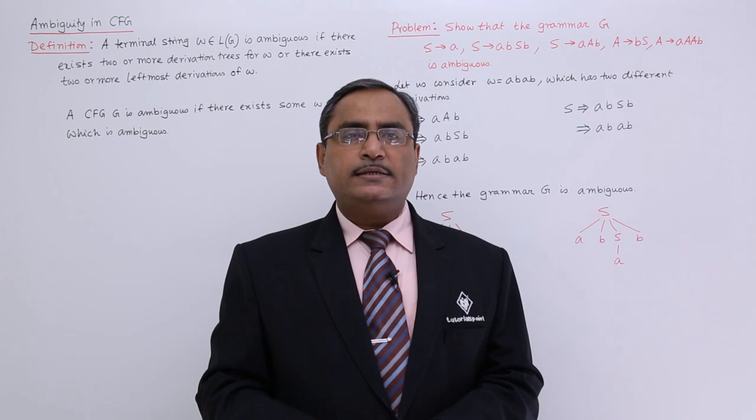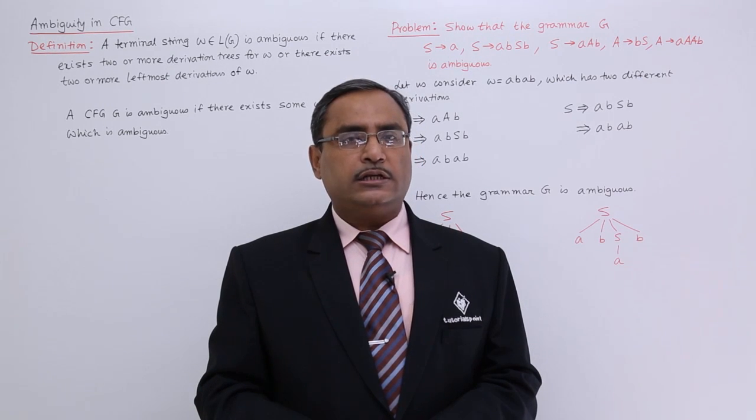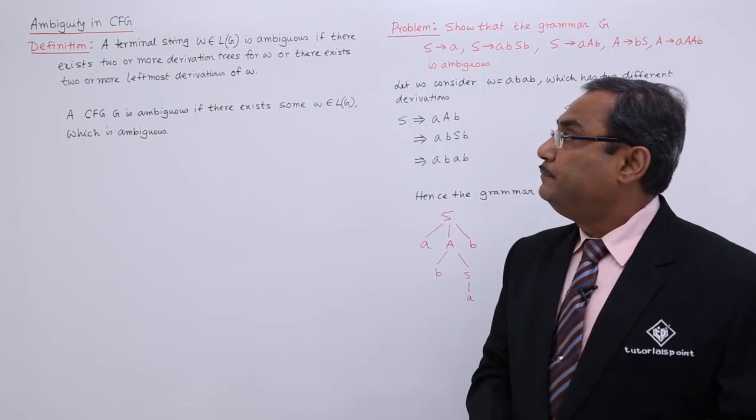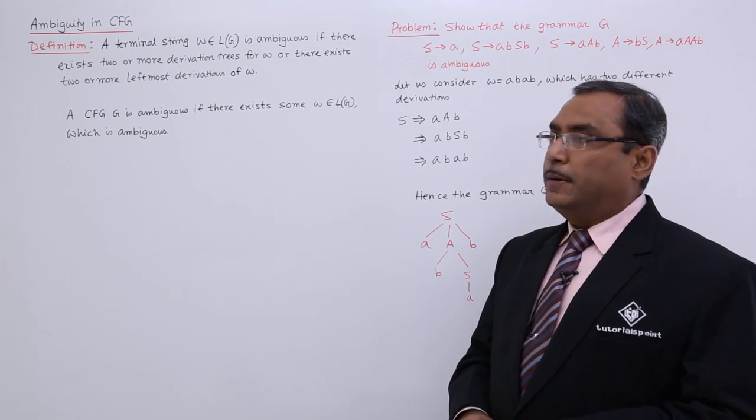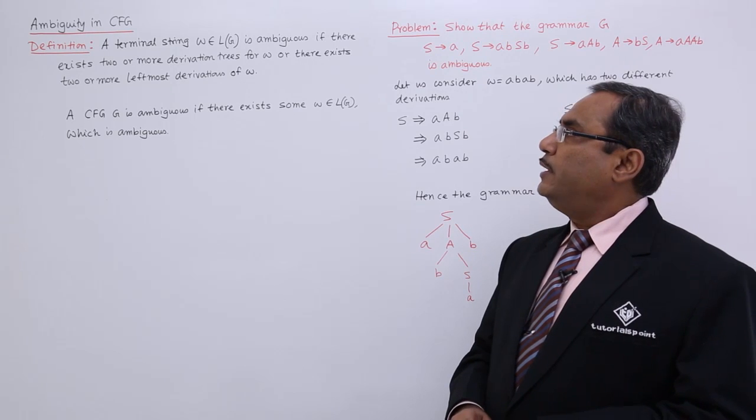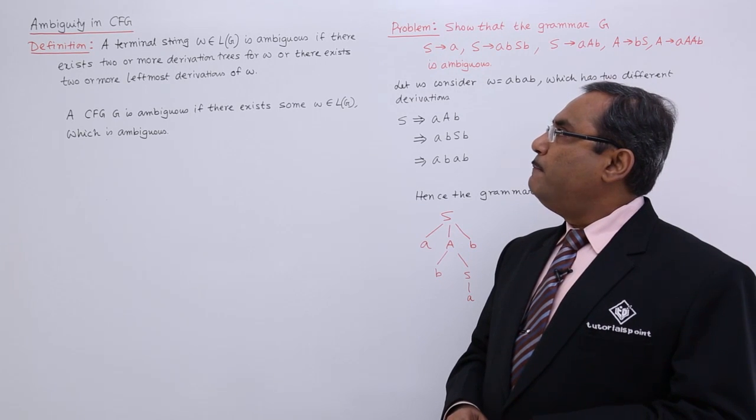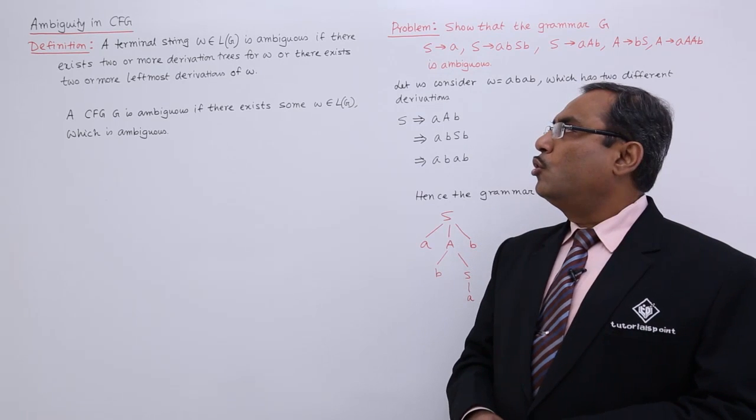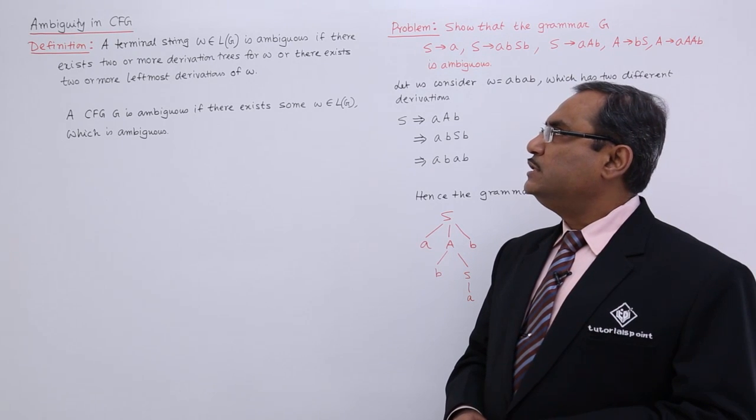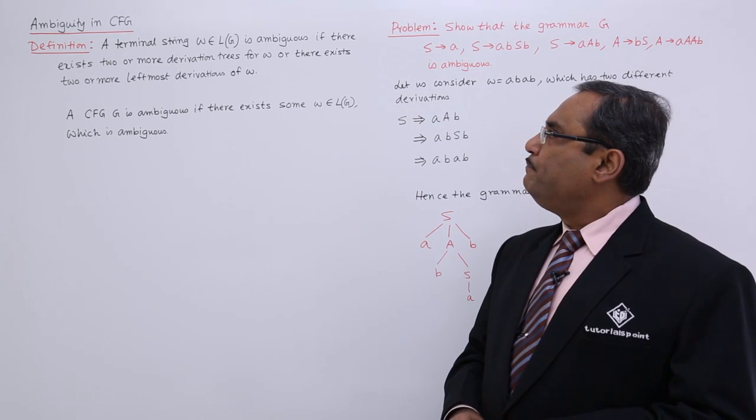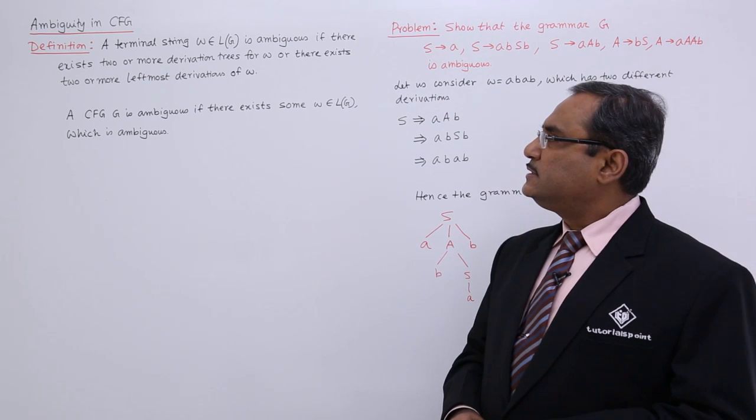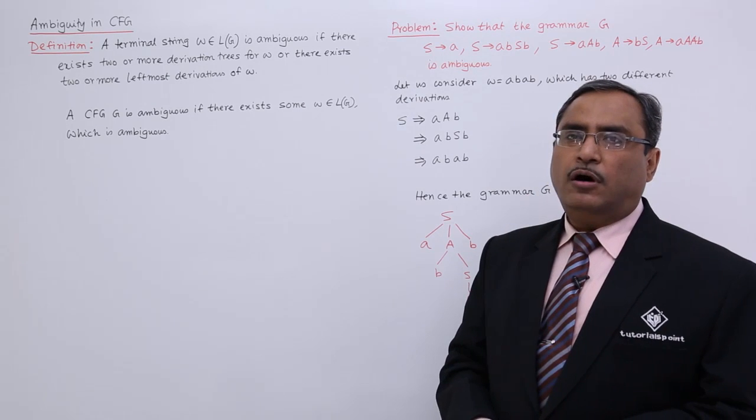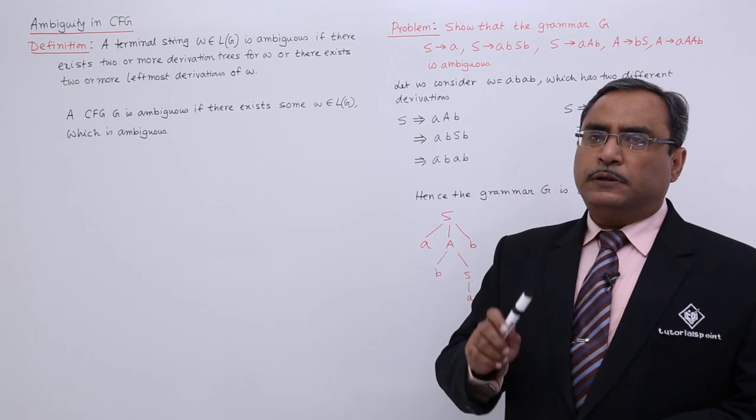In this session the topic is ambiguity in context-free grammar. A terminal string w which belongs to L(G) is ambiguous if there exists two or more derivation trees for w or there exists two or more leftmost derivations of w. That means for the same w